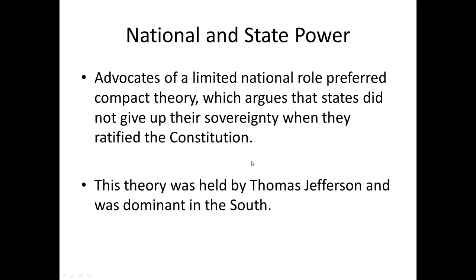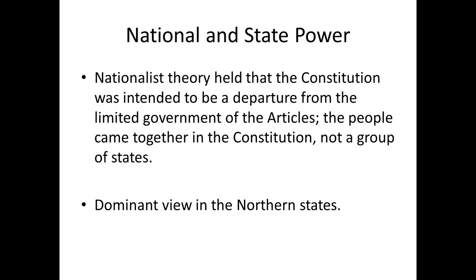On the other hand, people more favorable toward the new federal system adhered to what's called nationalist theory, or contract theory — saying that basically when the states enter into this new government, they're giving up some degree of their sovereignty. It's essentially a contract they're signing into with one another, vesting power into the federal government, and that's power they're not able to take back. This was the dominant viewpoint in the northern states, as opposed to the southern states who were more in favor of compact theory.